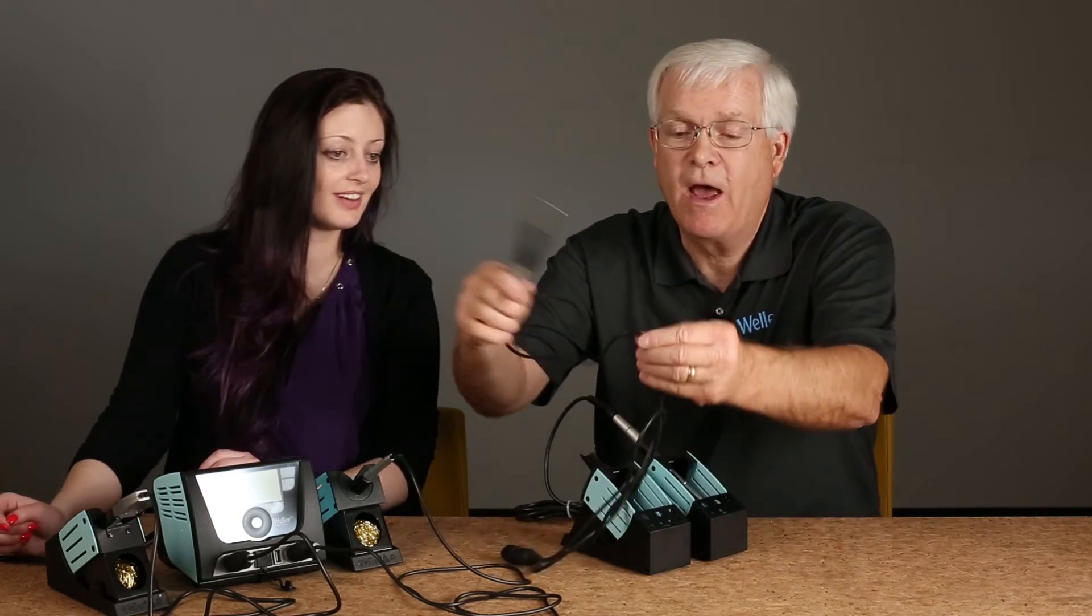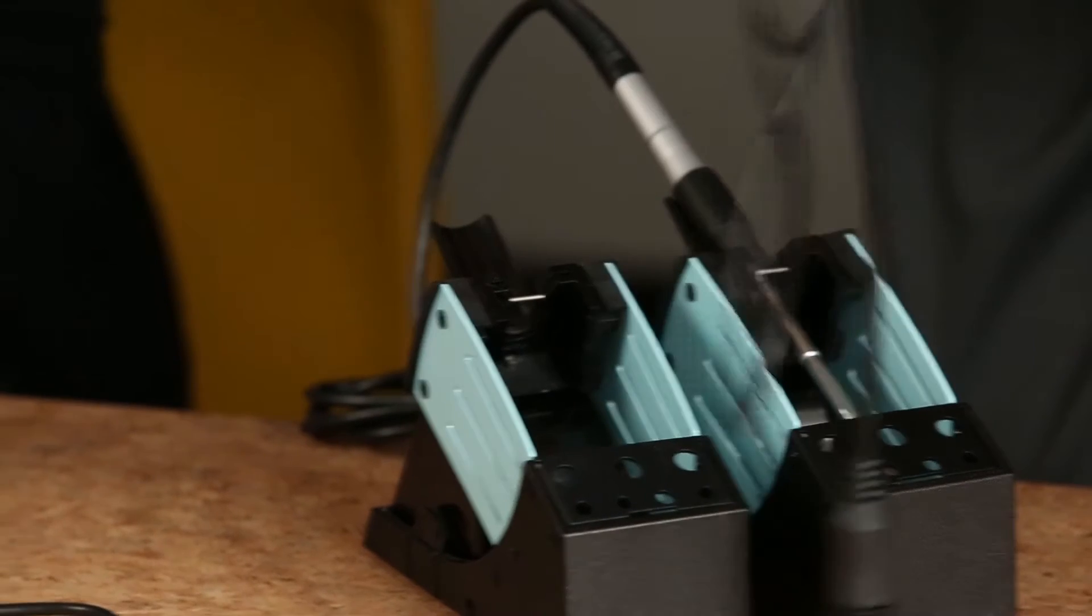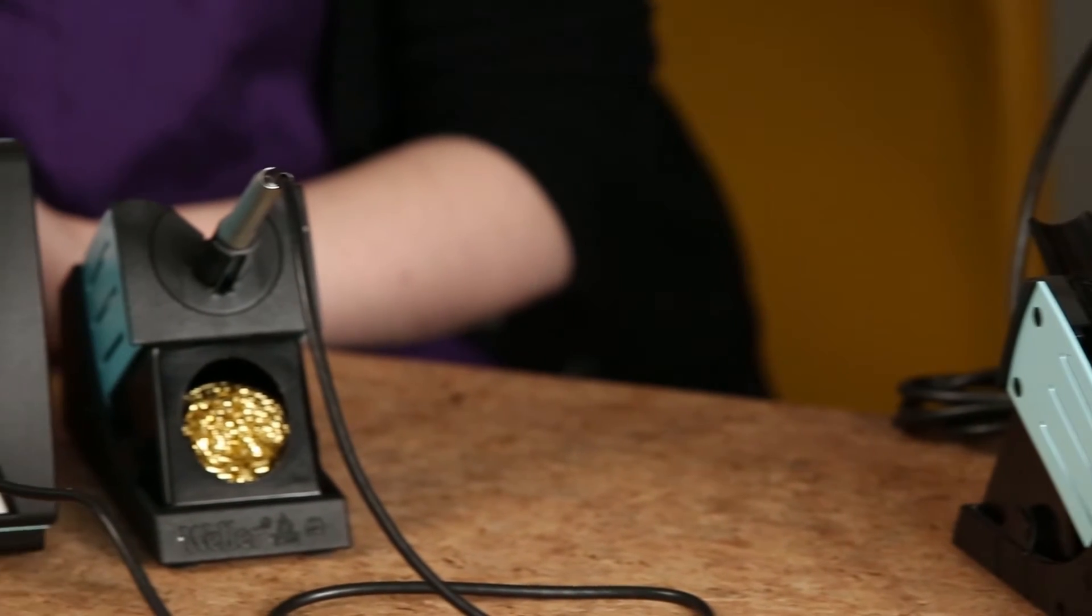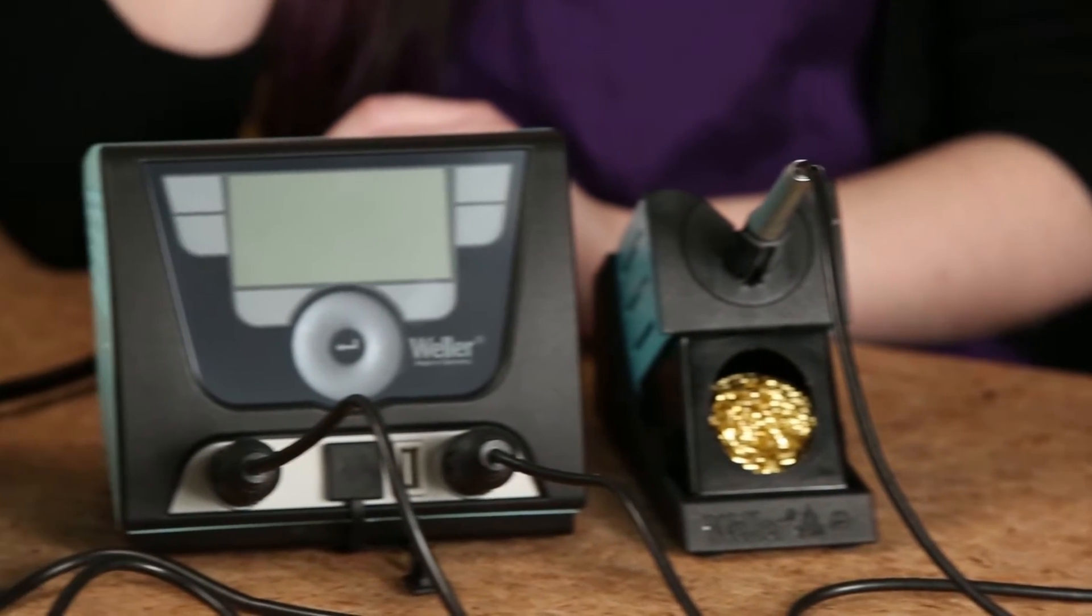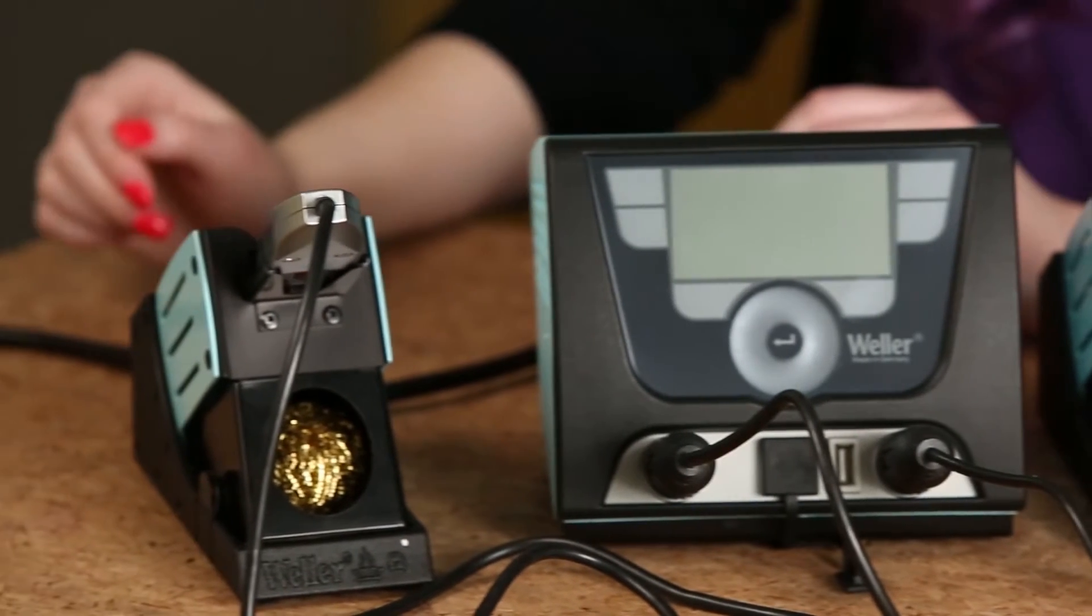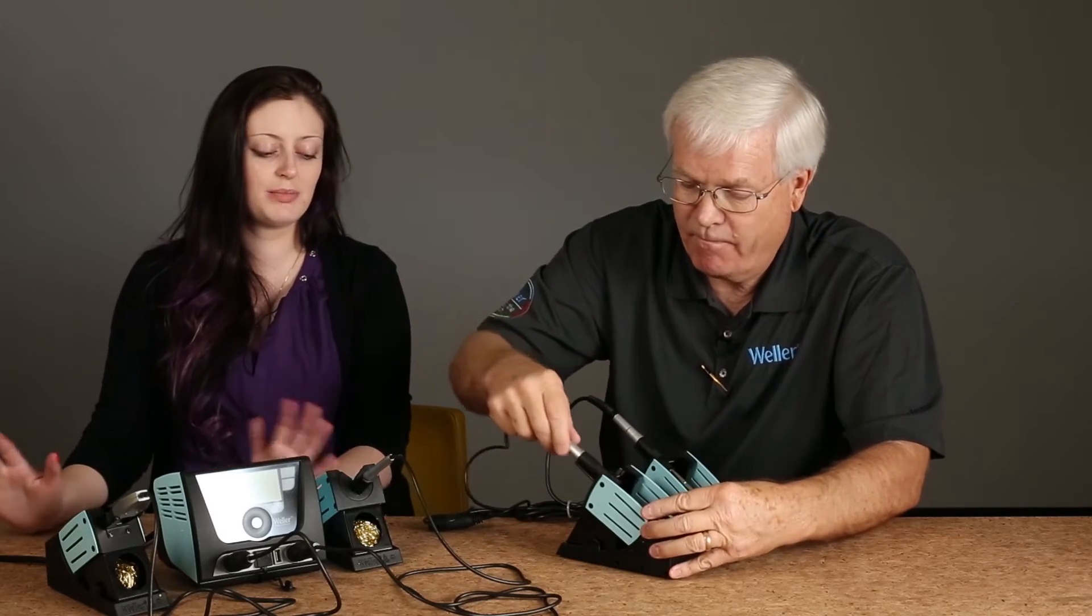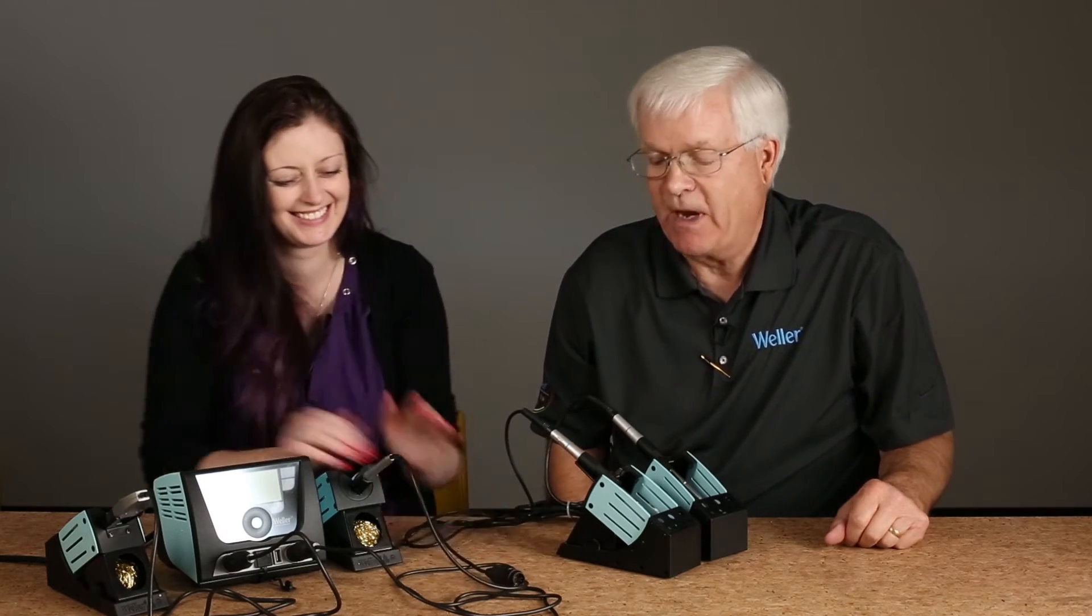They all have silicone anti-burn cords, so if it was hot and you accidentally touched the cord, you don't have to worry about burning a hole through it. What kind of temperature resistance does that have? Can you wrap it long-term? If you left it there for a long period of time, yes, it's going to burn, but if you just accidentally touch it, you won't have any problem at all.